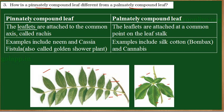Leaflets are nothing but many leaves which are attached to a common axis. This common axis is called rachis. So rachis is the common axis, and the individual leaves are called leaflets. In a pinnately compound leaf, these leaflets are attached to one another on opposite sides along a long axis called rachis.